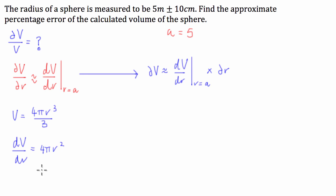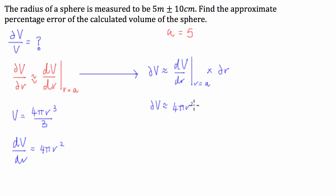So if we substitute this in for dV/dr, we're going to have the relationship that the incremental change in volume is approximated by 4πr² times dr.